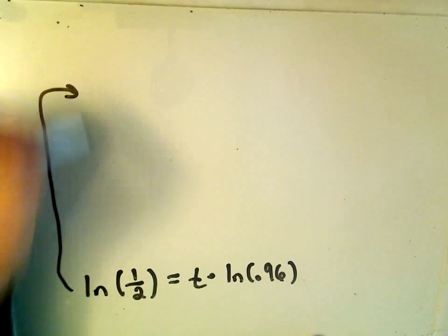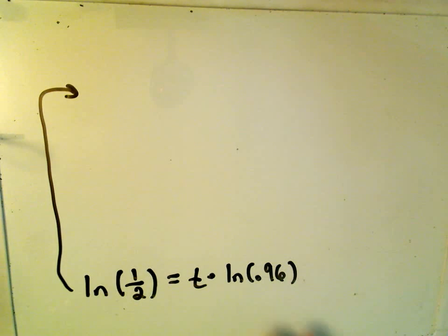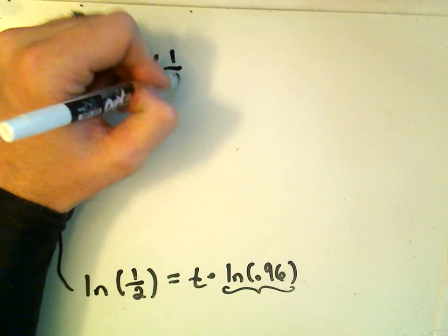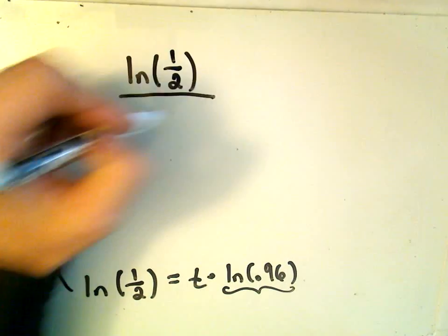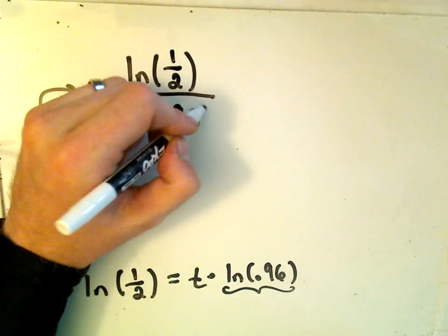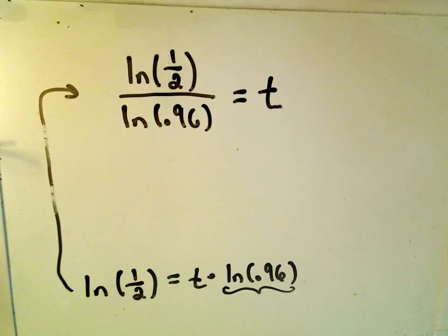So now I'm simply going to divide both sides. ln of 0.96 is just some number. So I'm going to divide both sides by that. And on the left side, I still have ln of 1 half. On the right side, if I divide, I'll get ln of 0.96. And that's going to be our t value.